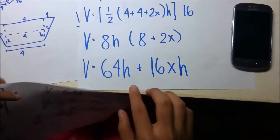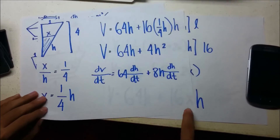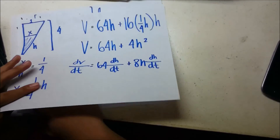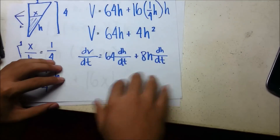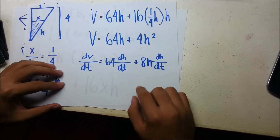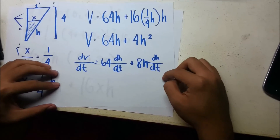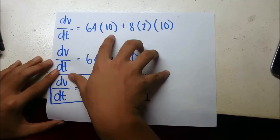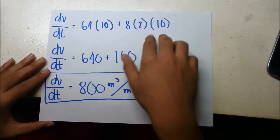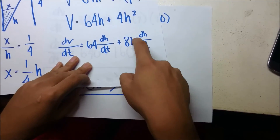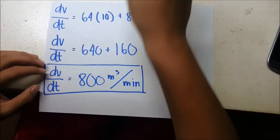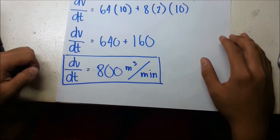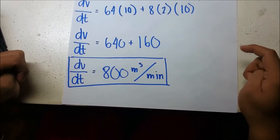Substituting x equals h/4 into the volume equation: V equals 64h plus 16 times (h/4) times h, which simplifies to V equals 64h plus 4h². Taking the derivative: dV/dt equals 64·dh/dt plus 8h·dh/dt. Plugging in dV/dt equals 10 and h equals 2: 10 equals 64·dh/dt plus 8 times 2 times dh/dt, giving 10 equals 80·dh/dt. Therefore dh/dt equals 1/8 meters per minute, which is the rate at which the water level is rising.